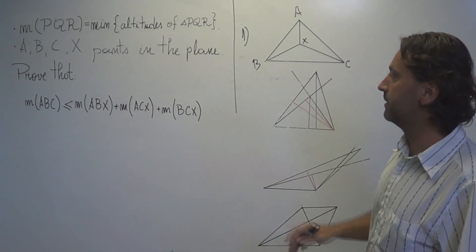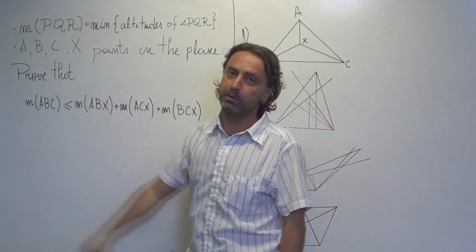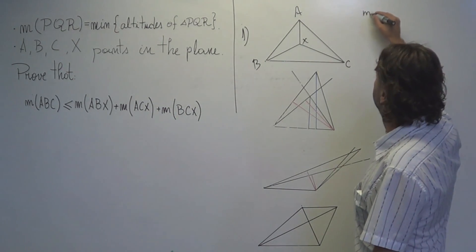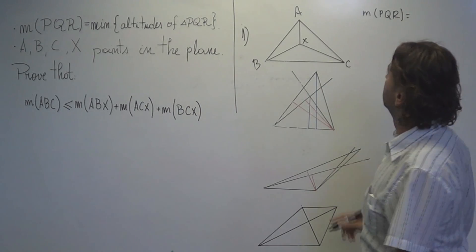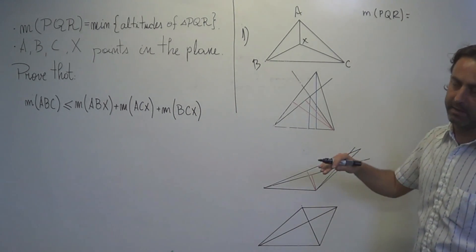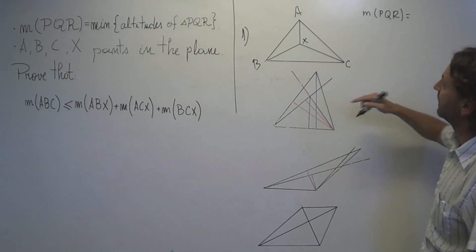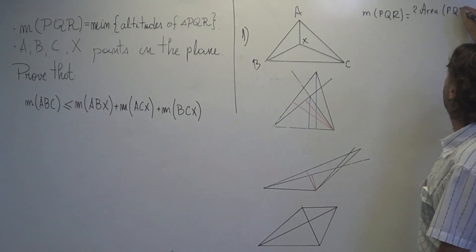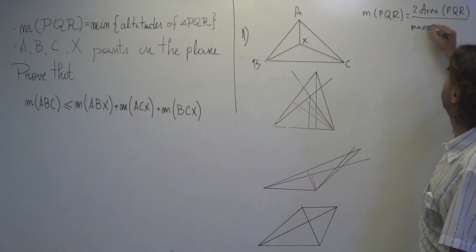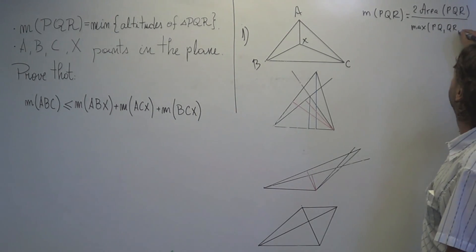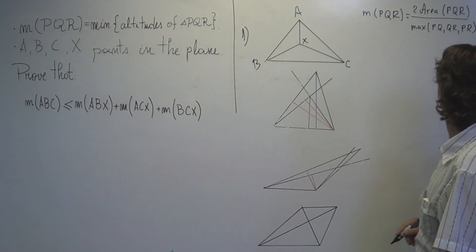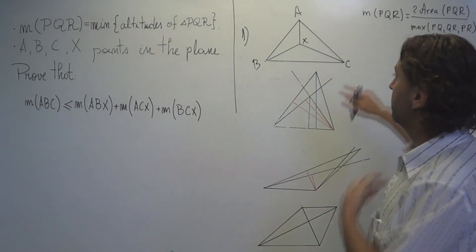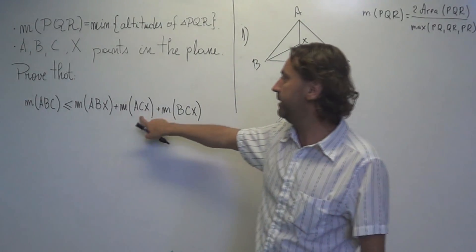Okay, how we do it in this case? The first remark is that this M of PQR can be written as something else. It can be written as two times the area of the triangle divided by the maximum of the three sides of the triangle. Right, two times the area of PQR divided by the maximum of PQ, QR and here.